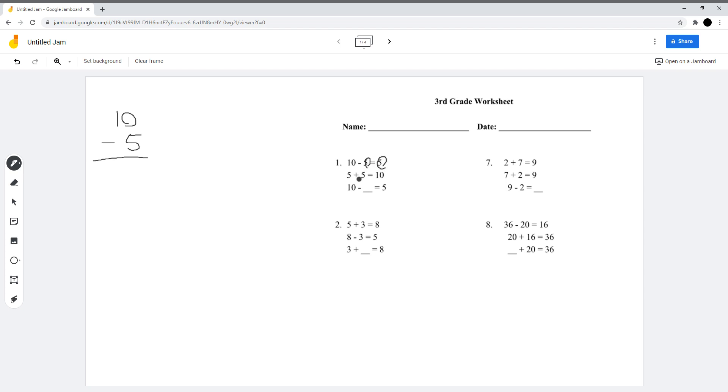5 and 5, the answer is 5. Number 2: 5 plus 3 is 8, 8 minus 3 is 5, 3 plus what is 8? 8 minus 3 is 5.